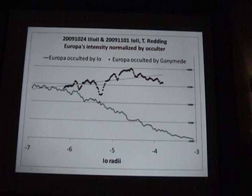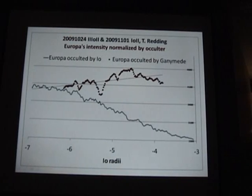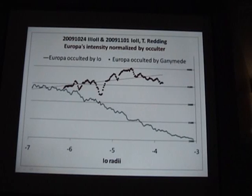Here is a Ganymede event, which is the red dots, compared to an Io event. This is Europa's intensity normalized by the object that's occulting it. We see that Europa did not dim when it went behind Ganymede, but Europa did dim when it went behind Io.